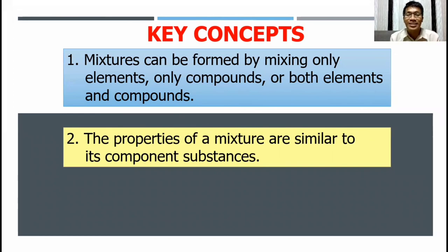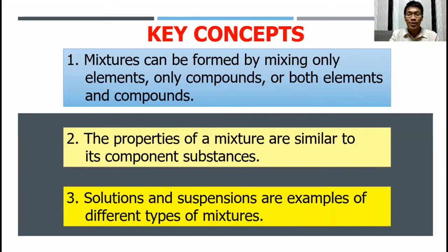Para maunawaan natin yung concept na ito, or yung idea na ito, gamitin natin yung halo-halo as our example. Pag ito ay namix na, at kinain mo ito, let's say for example, yung saging. So alam mo na, saging pa rin yun. Yung sago, alam mo na, sago pa rin yun. Ibig sabihin, ang properties ng mixture na yun ay kapareho pa rin ng individual components na meron doon. Dahil nga, they are physically combined together, kaya walang chemical reaction na nangyari. So as is pa rin yung mga properties ng bawat component. Tatandaan, properties of a mixture are similar to its component substances. Lastly, solutions and suspensions are examples of different types of mixtures.